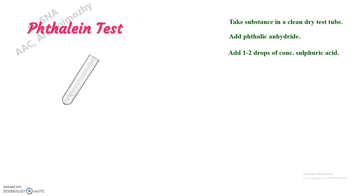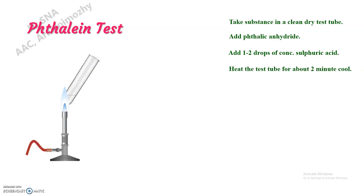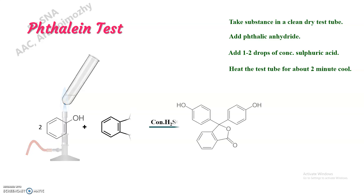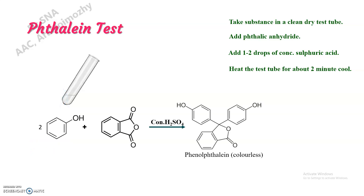Now we can heat it for just 2 minutes. After heating we can cool it. In this reaction we are getting phenolphthalein dye, which is actually colorless in acidic medium due to its benzenoid form.